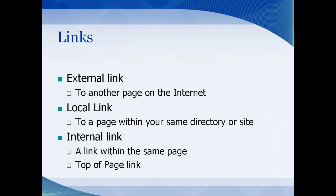The alt attribute is for screen readers for the blind. It tells the screen reader what the image is a picture of so it can be read aloud to someone who is visually impaired. We also have a couple of types of links. An external link is a link to another page on the internet — for example, a link to Google on your web page. A local link is a link within the same directory or same site, just another page within it. An internal link — which we won't cover today — is when you link within the same page, like a link to the top of the page.